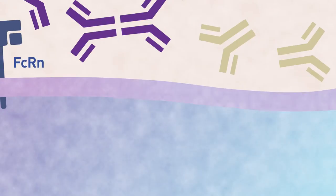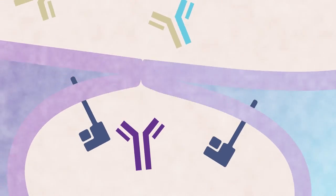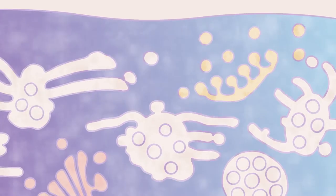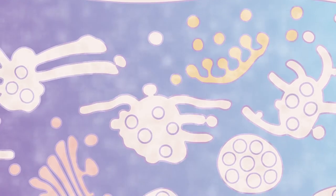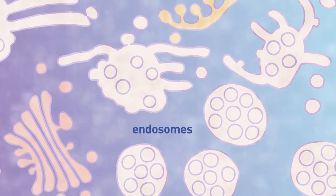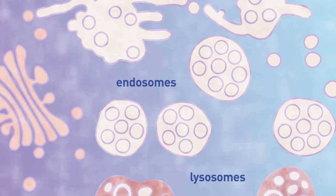The IgG isotypes bind to a receptor called FcRn. FcRn is within a pathway such that when the antibodies are internalized and the pH of those endosomes is lowered as they're approaching the lysosomes,